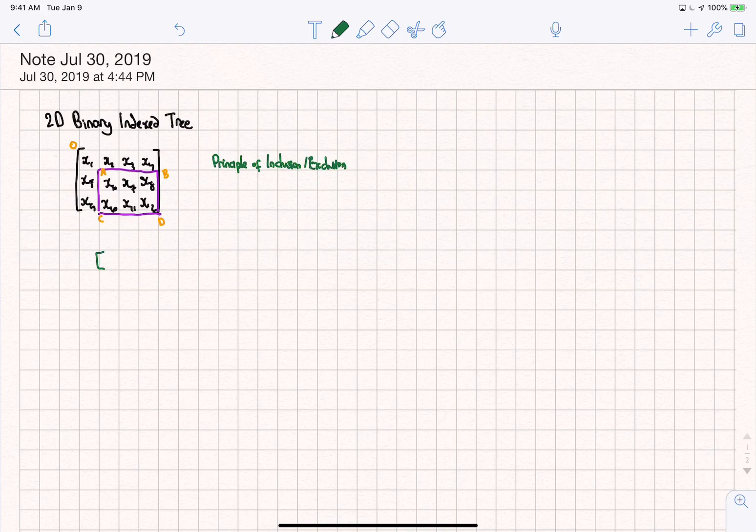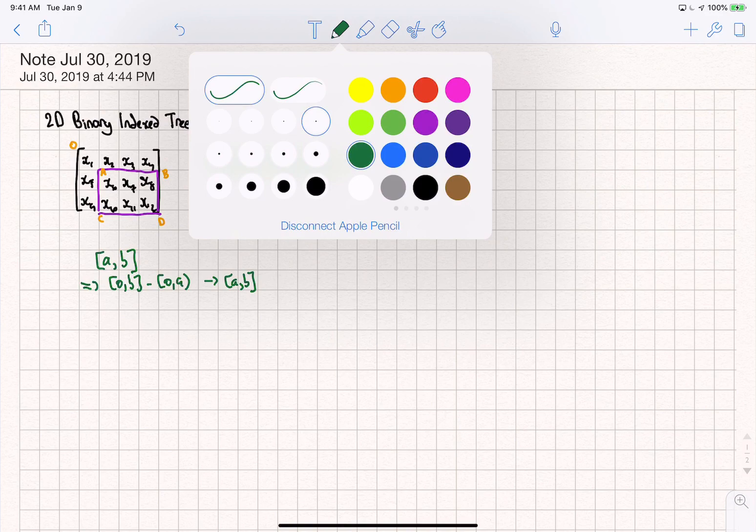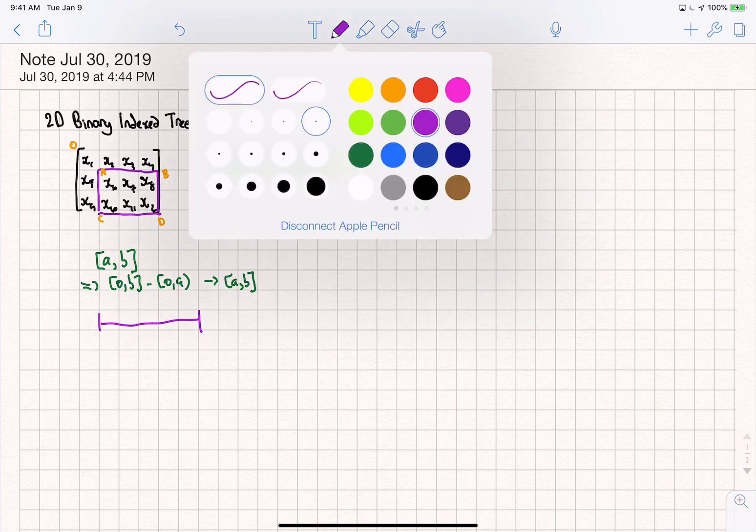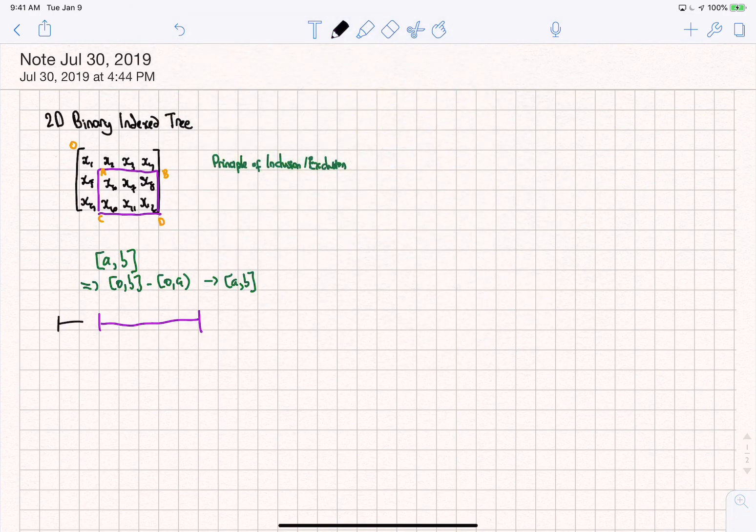This is like how we did the binary index tree. If we wanted to get the summation from A to B, we could have gotten the summation of 0 to B minus 0 to A. And this would, of course, result in A to B. Because you take any endpoint here, and if I want to get this portion from here, you simply need to get this whole thing, get the smaller portion and subtract that so you can get this shaded area.